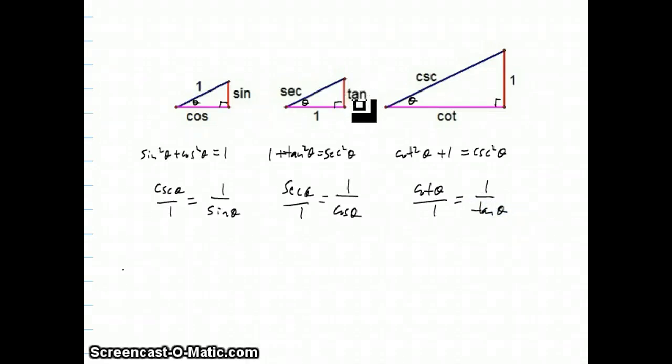Using the medium and the small triangle, I could say tan over one equals sine over cosine. And I could even use this one, cotangent over one, since it's similar to the small triangle, equals cosine over sine.